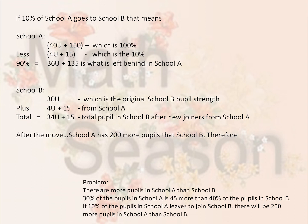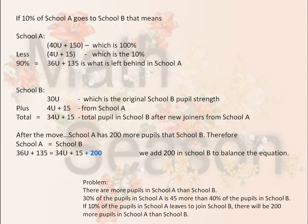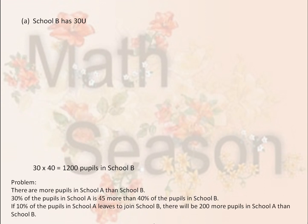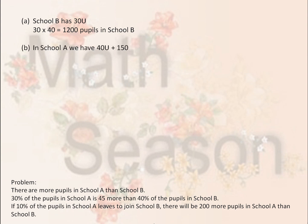After the move, School A has 200 more pupils than School B. Therefore, 36U plus 135 equals 34U plus 15 plus 200. We add 200 on the School B side of the equation to balance it. We can now solve for U, and we get U equals 40. School B has 30U, so 30 times 40 equals 1200 pupils — that's the answer for School B.